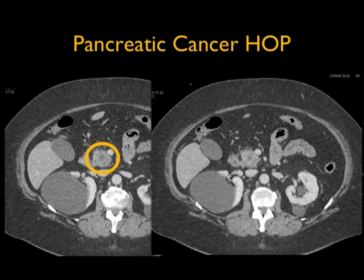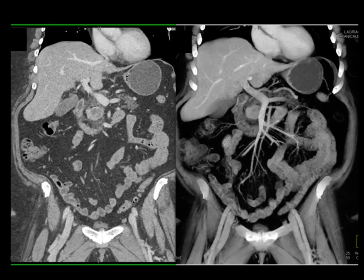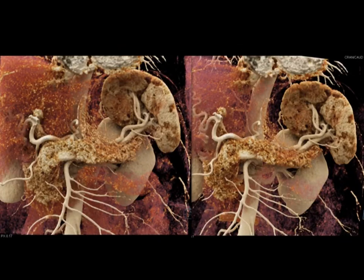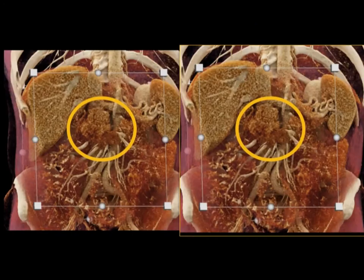This is a simple case of pancreatic cancer. You can see it better on the coronals and the volume rendered. This whole idea about cinematic rendering and the detail it provides — when you look at a case where no one saw the tumor, cinematic rendering shows the tumor in the uncinate, which was already encasing the mesenteric veins. The ability to see more and recognize more is the promise of AI, and how we build that into our practice.